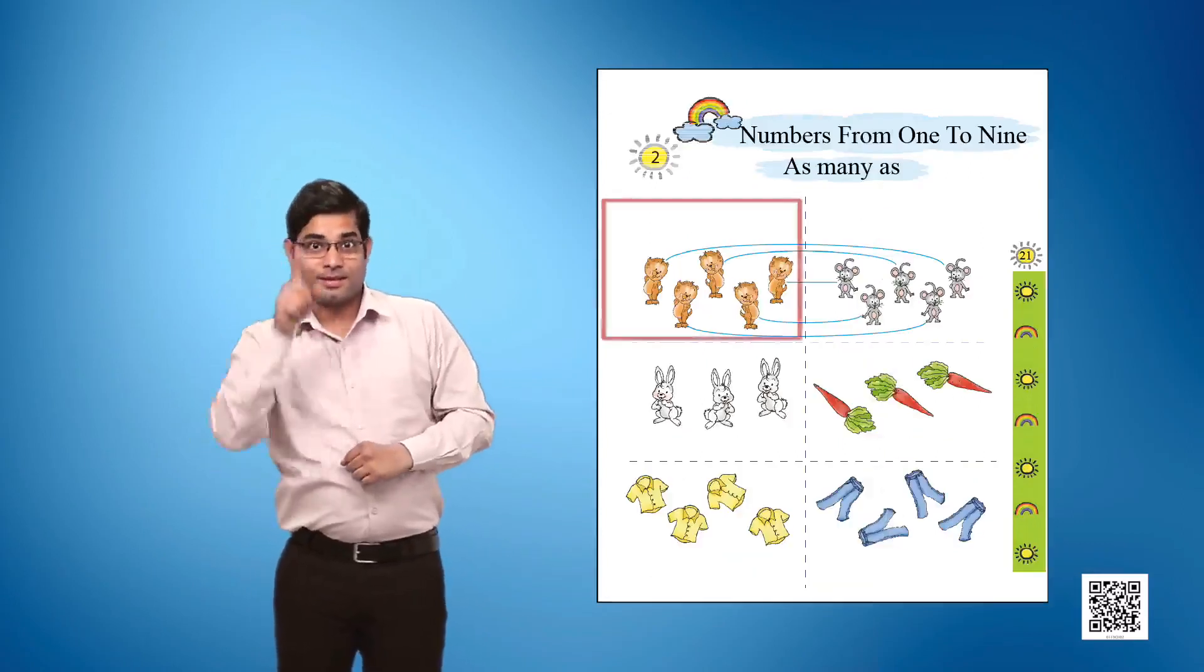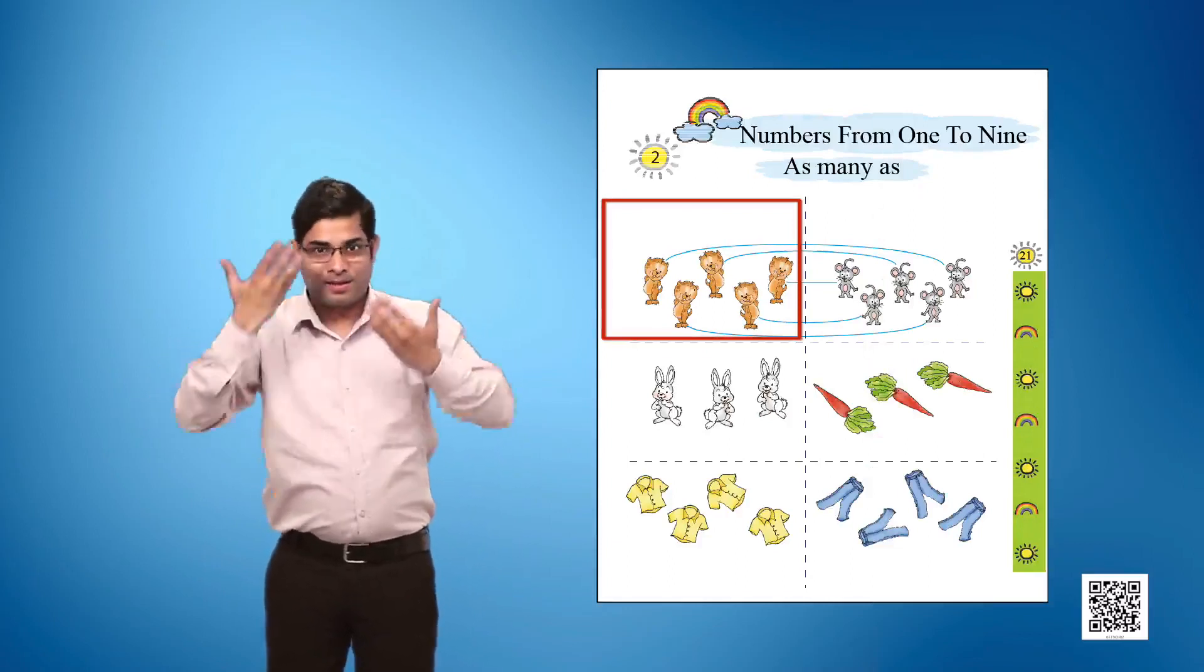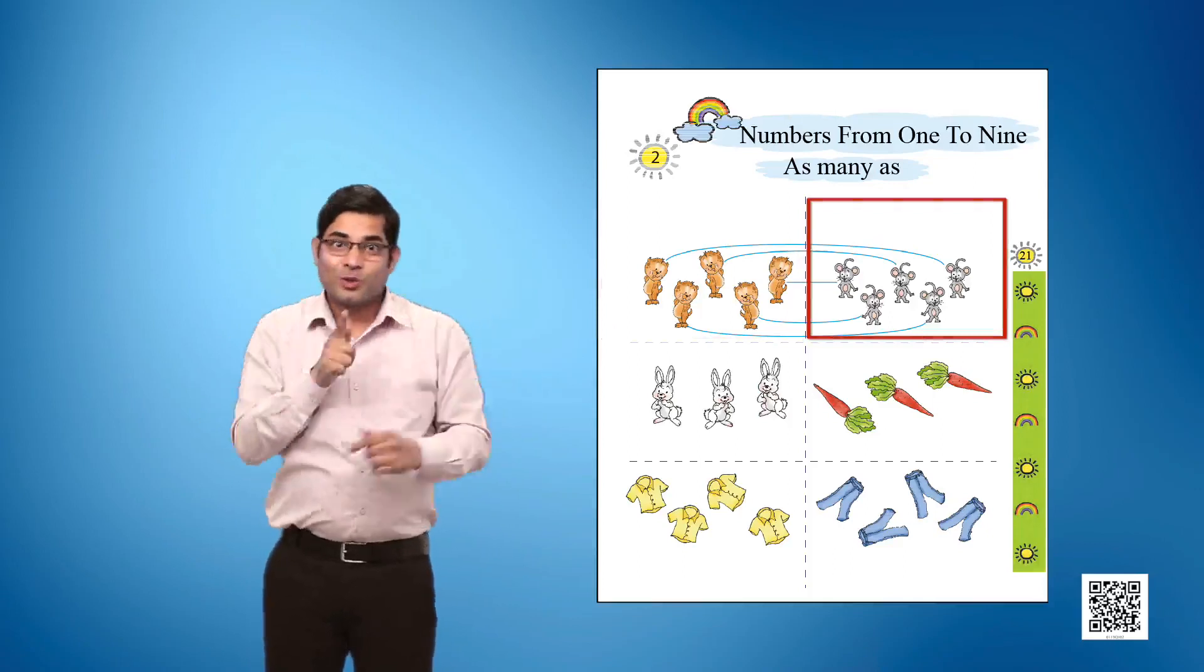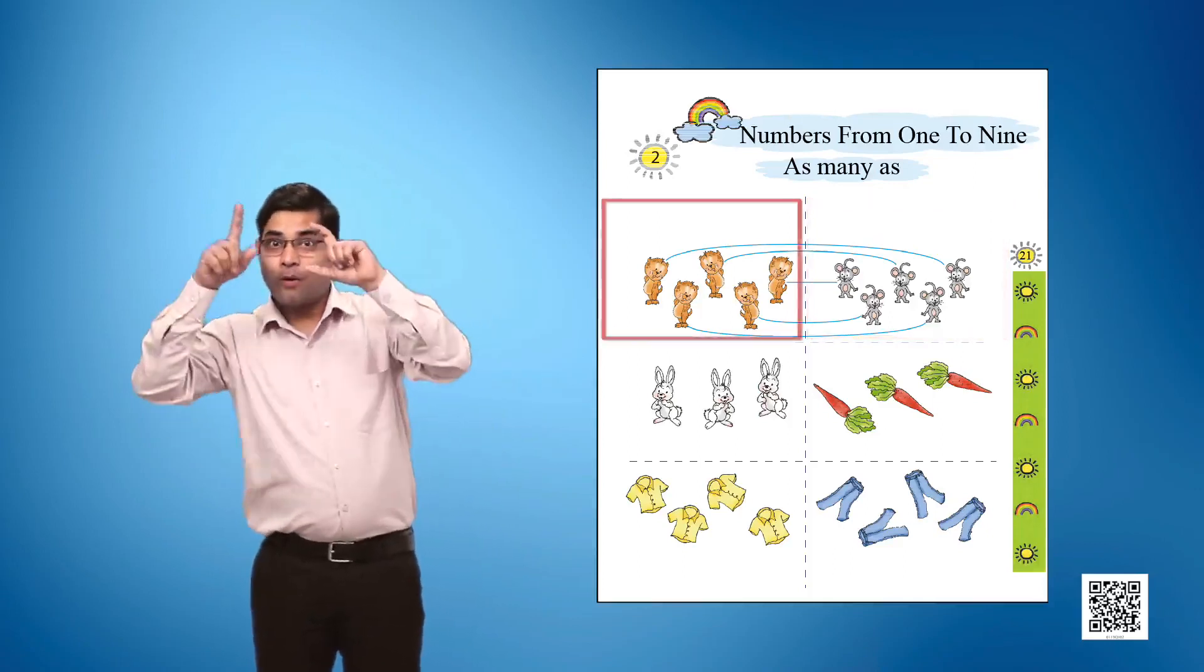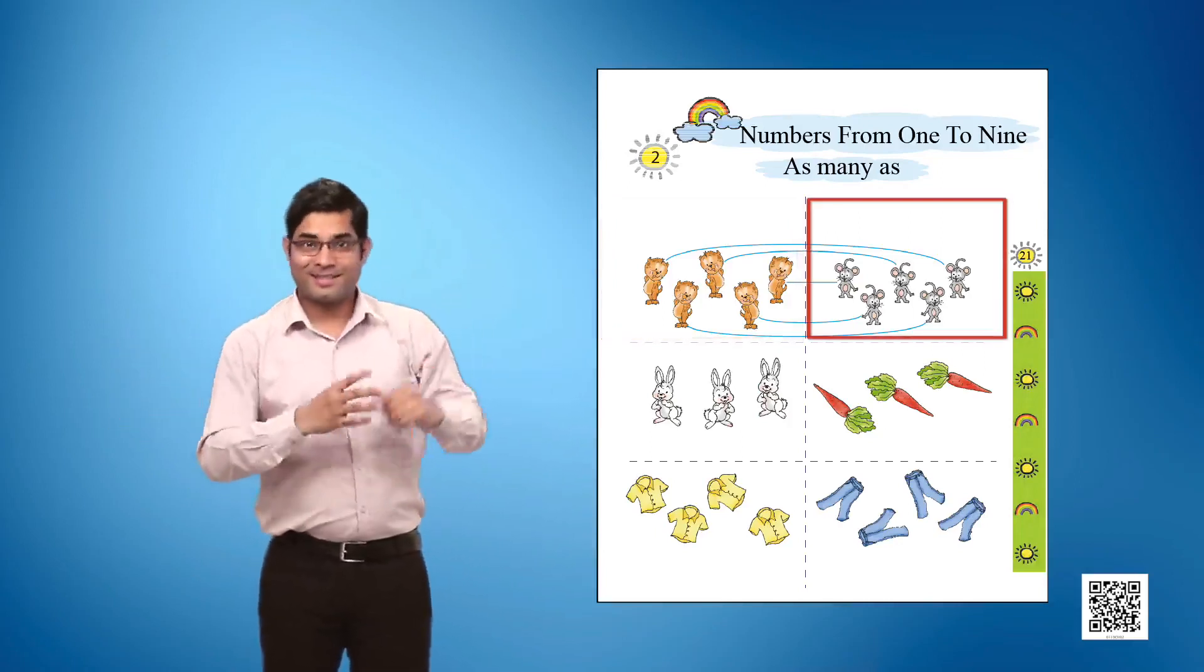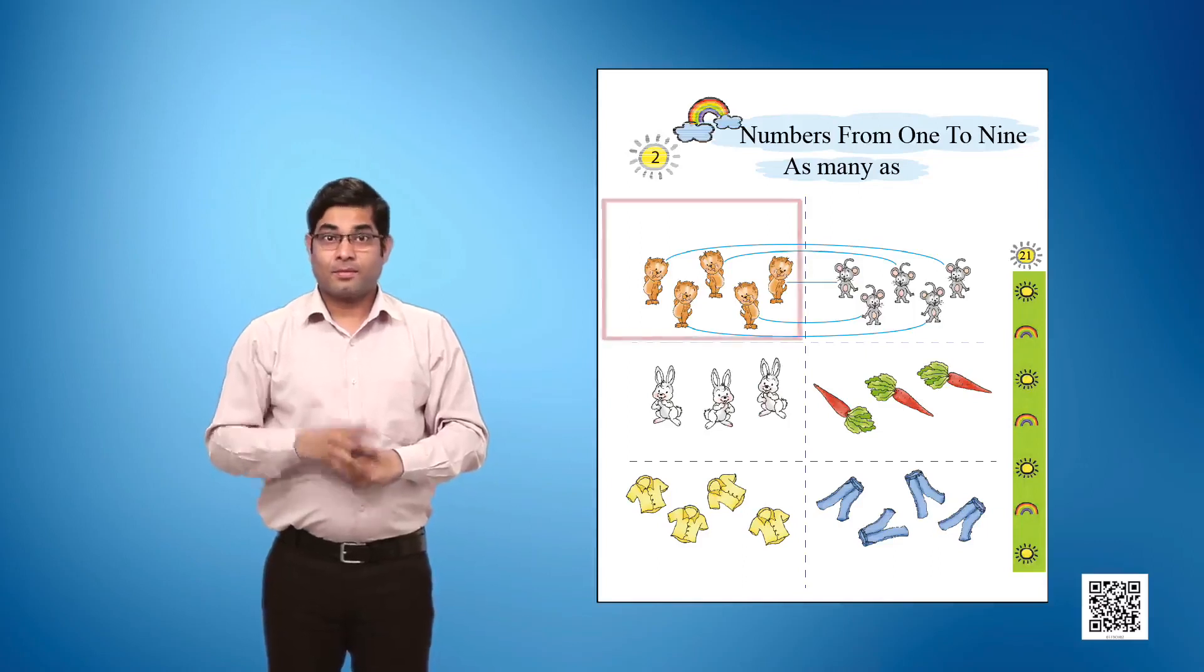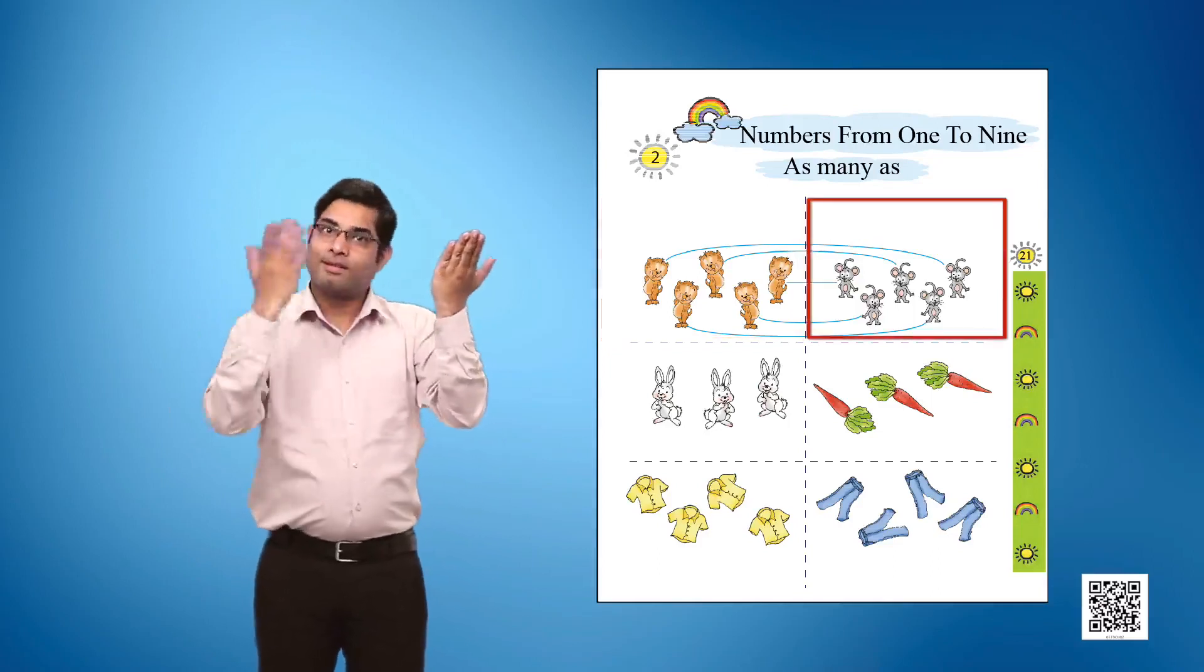Column 1, Picture 1 shows few cats. Column 2, Picture 1 shows few rats. Each cat in picture 1 of column 1 is matched with a rat in picture 1 column 2 by drawing a line. So we have as many cats as rats.